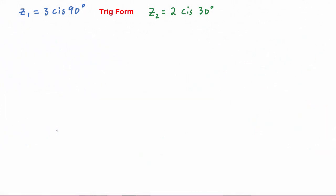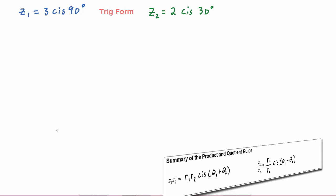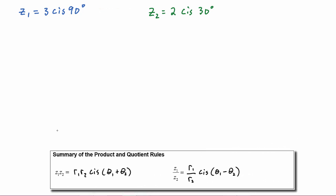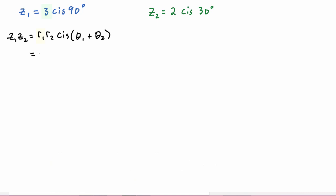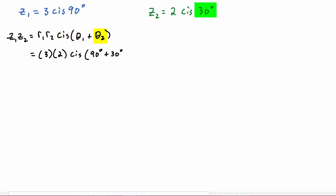Now that we have z1 and z2 in trig form, we can apply the product rule and the quotient rule. The product z1 times z2 is equal to r1 times r2, cis (theta one plus theta two). That's going to equal three times two, cis (90 degrees plus 30 degrees), which is equal to six cis 120 degrees.